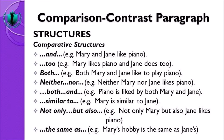In terms of structures, comparative structures have a few things to bear in mind. Ada pola kosa kata yang bisa digunakan untuk menunjukkan comparative structures, seperti: and, to, both, neither nor, both and, similar to, not only but also, the same as. Contoh pertama: Mary and Jane like piano — kata and menunjukkan comparative. Contoh kedua: Mary likes piano, and Jane does too.